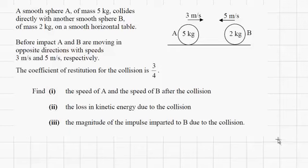Here we have a problem with two smooth spheres colliding. They lose a little bit of energy, and the coefficient of restitution is 3 over 4. We're asked to find the speed of both A and B after the collision, then the loss of kinetic energy due to the collision, and then the magnitude of the impulse imparted.